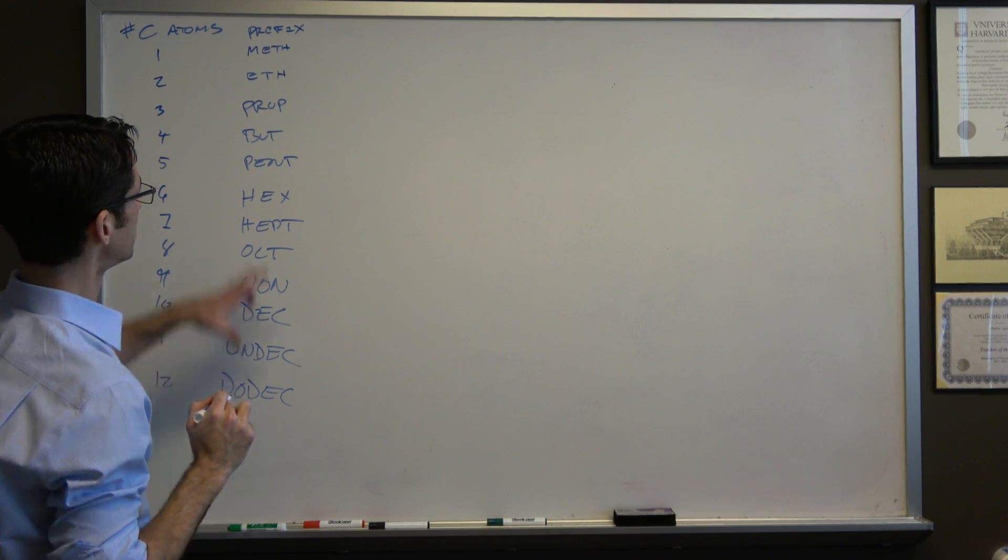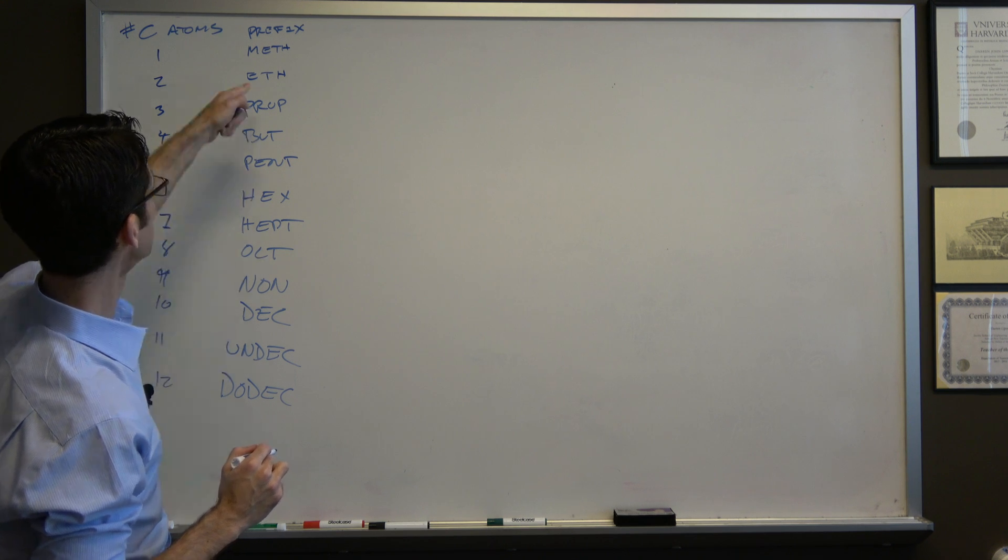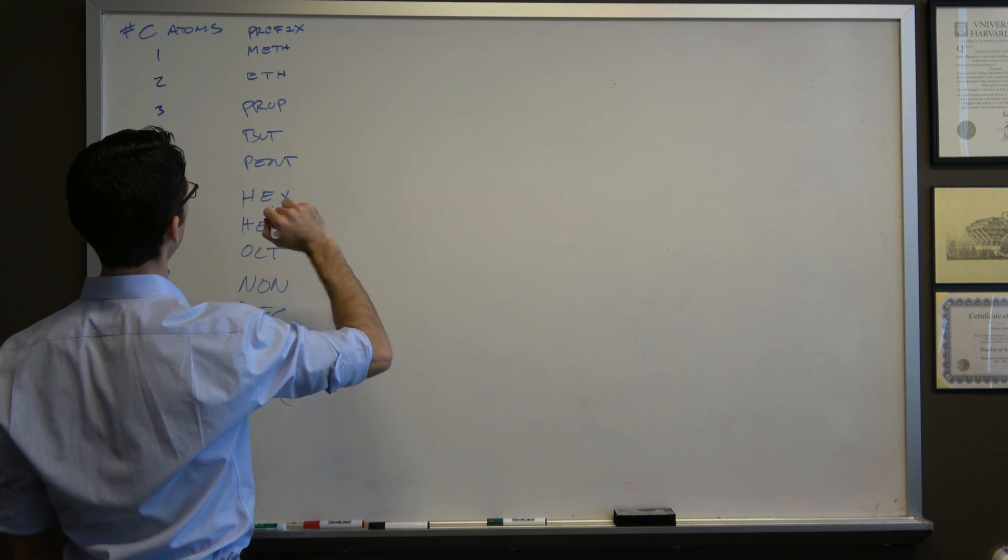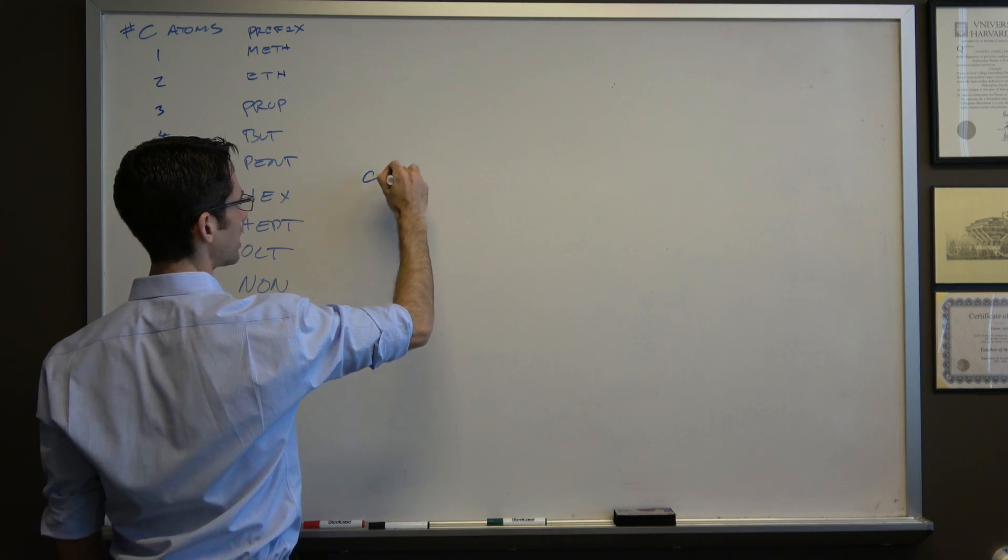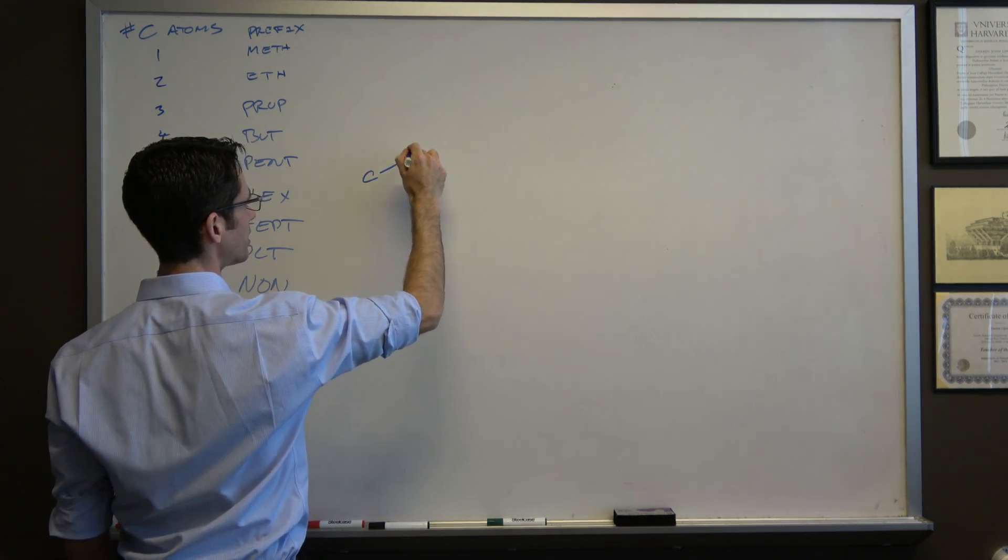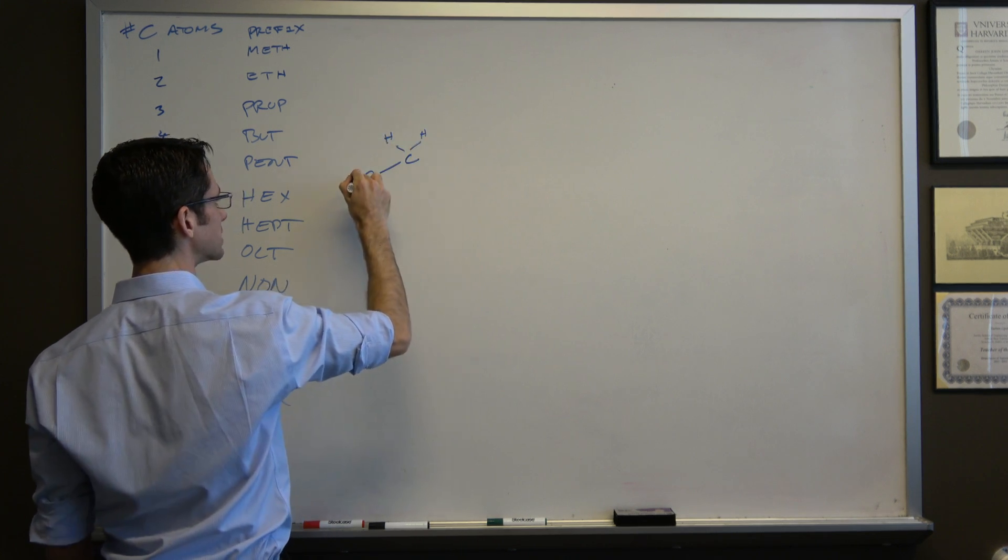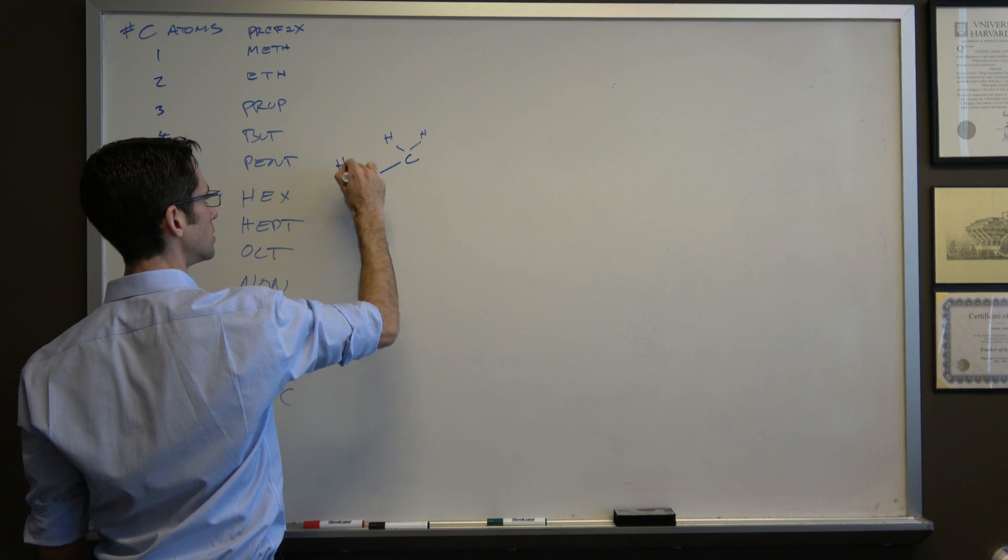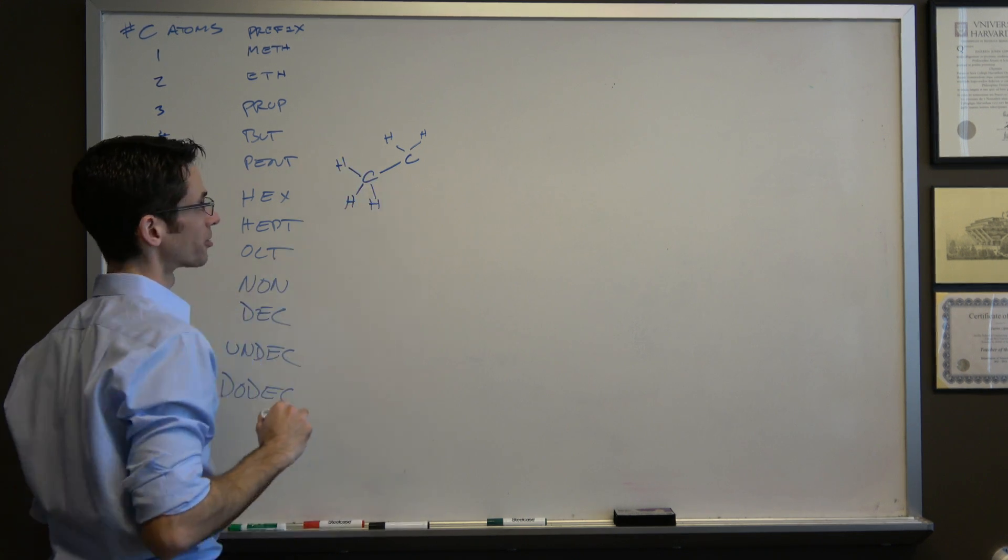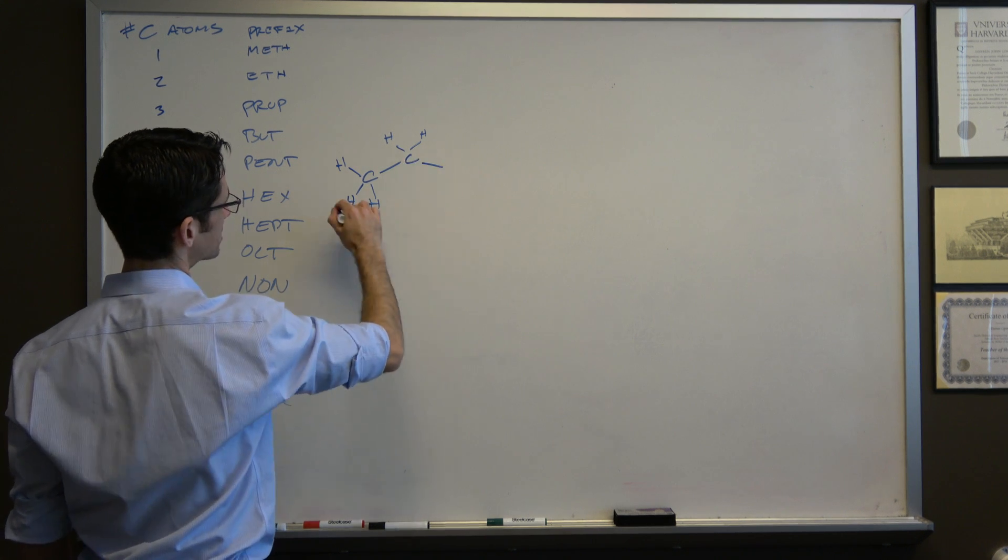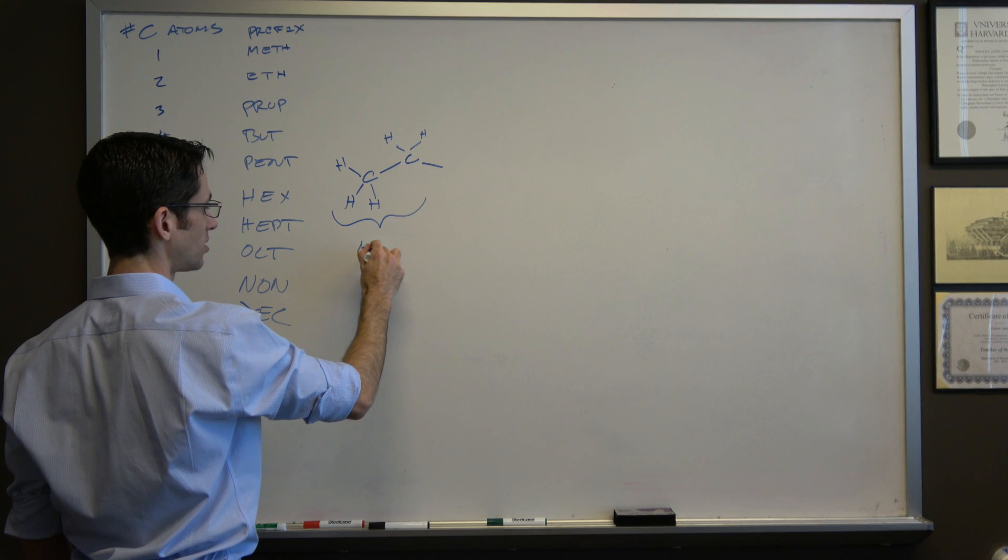Let's take eth. Eth is two carbon atoms, so we have a carbon atom here, carbon atom here. We know that each carbon atom is bonded to four other things and we have something hanging out here - we're not sure what it is yet, we don't care. This is called eth.